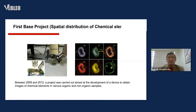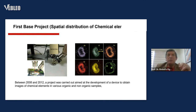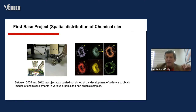X-photon — the fourth basis for our projects — involves the spatial distribution of chemical elements. This was our first project, between 2008 and 2012. The project was carried out to develop a device to obtain imaging of chemical elements in various organic and non-organic samples. You can see several pictures related to arsenic, chlorine, copper, iron, potassium, and titanium in the red kit.